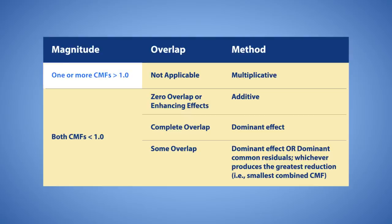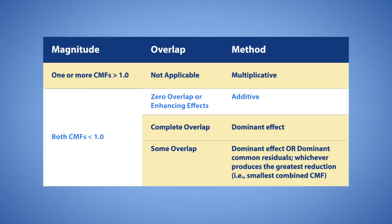If one or more CMFs are greater than one, the multiplicative method is appropriate. This is the method presented in the first edition of the Highway Safety Manual, where you simply multiply the two CMFs. If both CMFs are less than one, consider the potential for overlap. If you expect zero overlap or enhancing effects, then the additive method is appropriate, which assumes the full effect of both countermeasures with a maximum reduction of 100%. If you expect complete overlap, the dominant effect method is appropriate because it only considers the countermeasure with the smallest CMF.